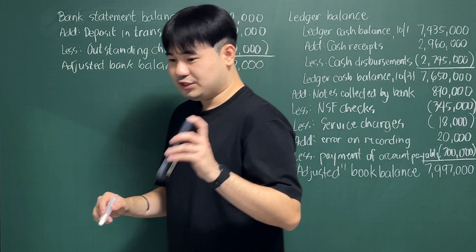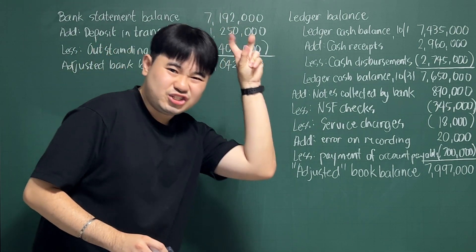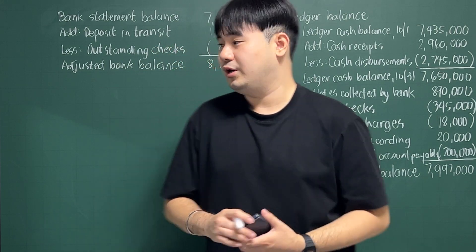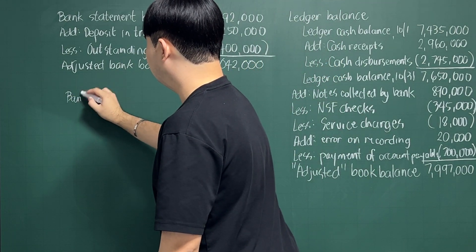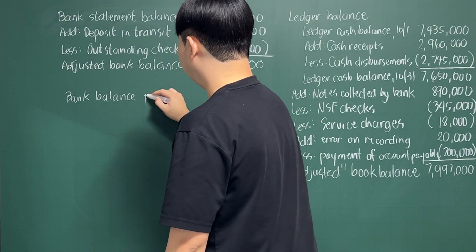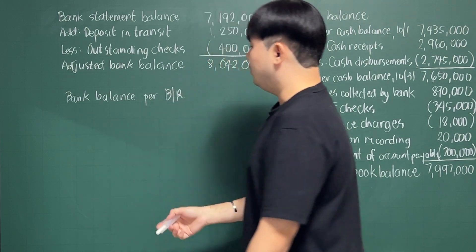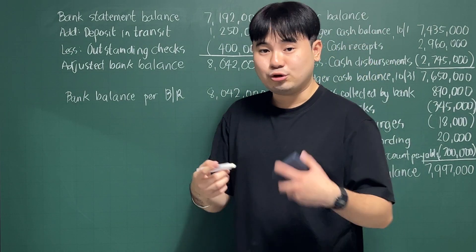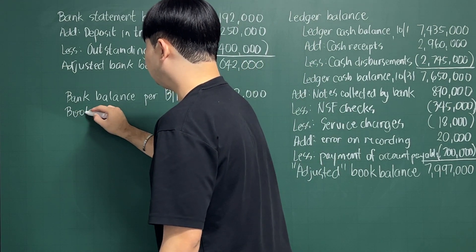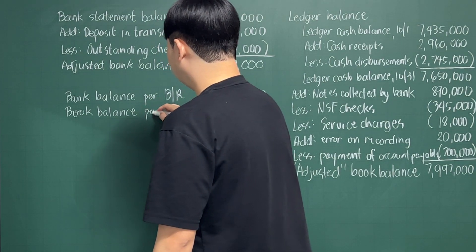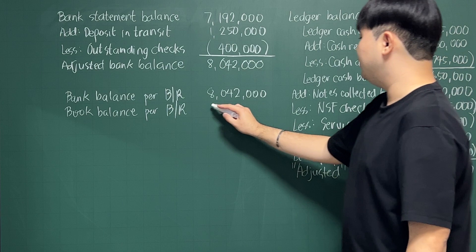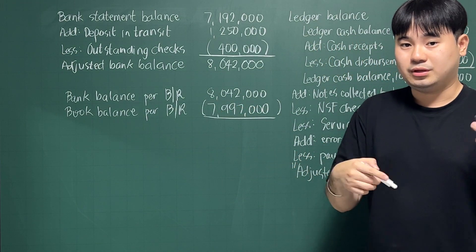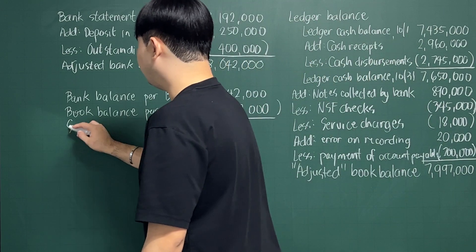Okay, so as you can see, the adjusted bank balance that we have here is not equal to the adjusted book balance that we have here. Let's try if we can see the suspected amount of cash shortage here. Bank balance after your bank reconciliation is $8,042,000. And let's try to compare or basically deduct it with the book balance after you have performed your bank reconciliation of $7,997,000. Let's just try to deduct the smaller amount so we get the difference. So this is your suspected cash shortage.